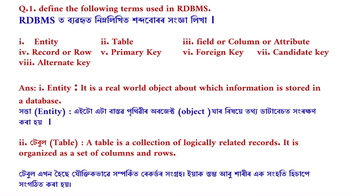Next, Table. A table is a collection of logically related records. It is organized as a set of columns and rows.